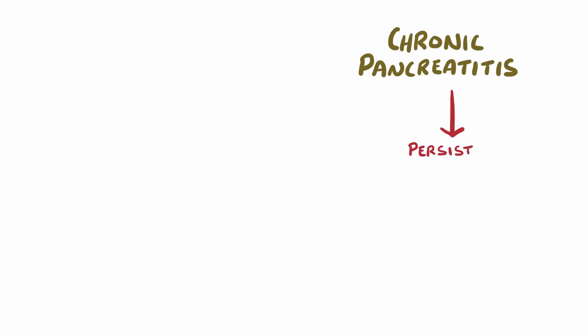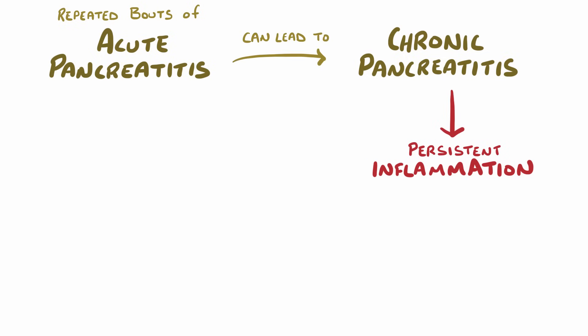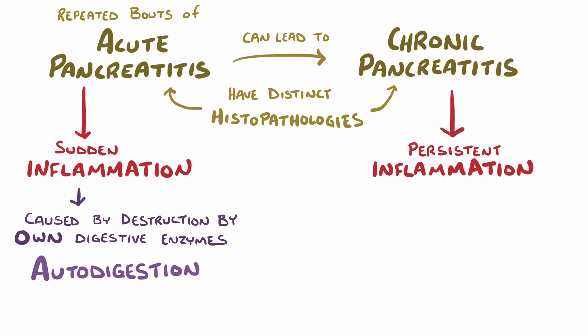Chronic pancreatitis is persistent, chronic inflammation of the pancreas, often due to repeated bouts of acute pancreatitis. While a history of acute pancreatitis might lead to chronic pancreatitis, these diseases have distinct histopathologies. Acute pancreatitis is inflammation caused by destruction of the pancreas by its own digestive enzymes, a process called autodigestion, and is generally reversible.